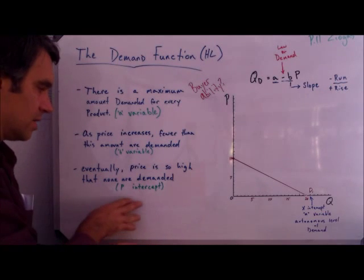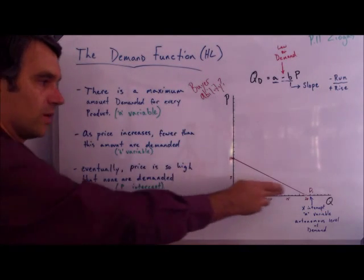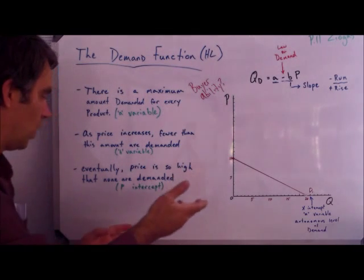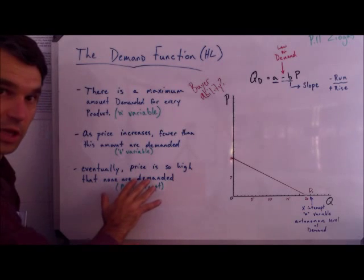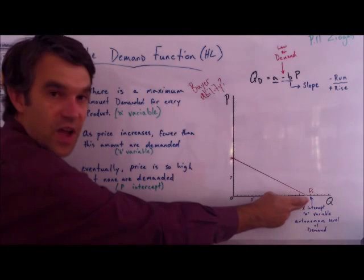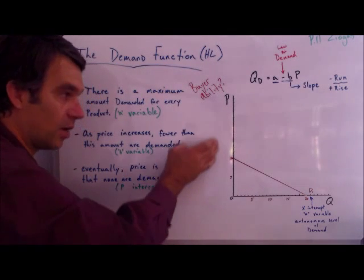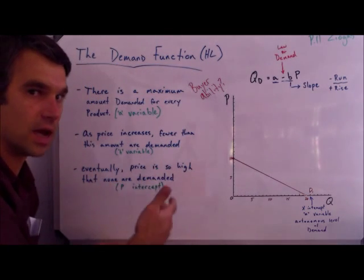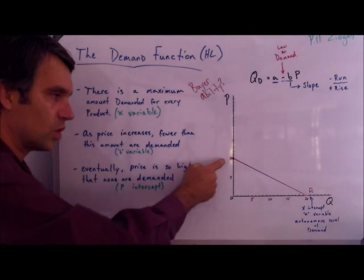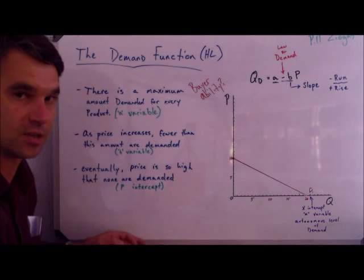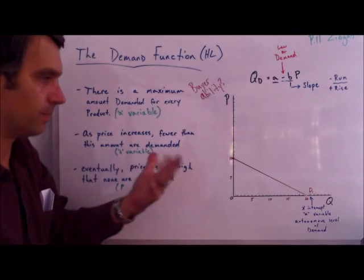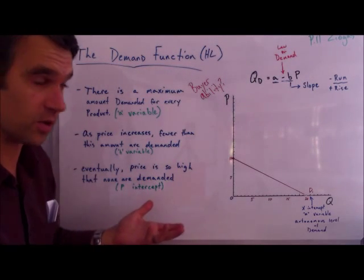There's one last thing we need to know to write the demand function, and that's where is the P-intercept — where does this line intercept the P-axis? Conceptually, what we're saying is that if I raise price, and every time I raise price I lose some of this finite number, eventually I'll raise price so high that none of those people want to buy it anymore. That's the idea of the P-intercept. We don't have a different name for it and you don't see it in the formula, but it is of course there.